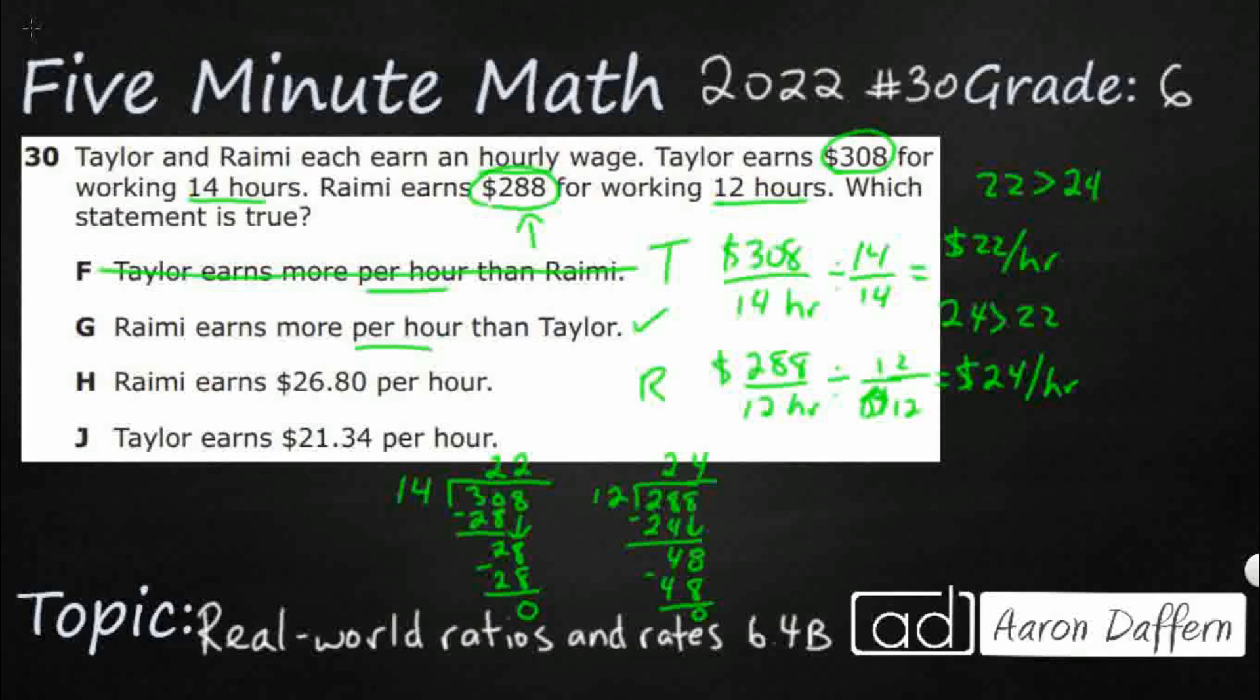Let's check H and J just to double check. Ramey earns $26.80 per hour. No, I'm not sure we're getting the 26.80. Unless, for some strange reason, we were to divide the 288 by the 14. So, nope, not even that would get there. I'm not sure where that's coming from.